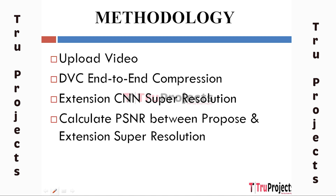The third module is Extension-CNN Super Resolution, an enhancement to the DVC framework. After the DVC compression process, the framework applies a CNN-based super-resolution algorithm. Super-resolution aims to enhance the resolution and details of compressed frames. A high-intensity pixel replacement algorithm is employed, which further improves image quality by replacing weak-intensity pixels. However, this process may lead to a decrease in image size due to the removal of certain pixels.